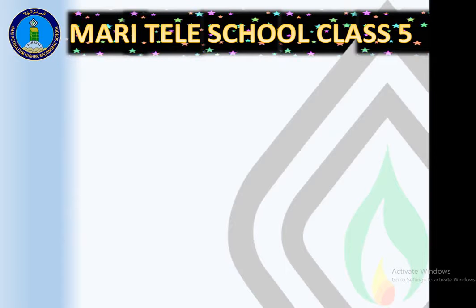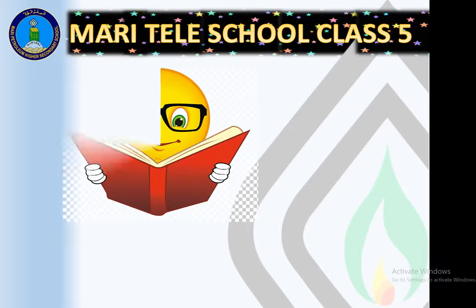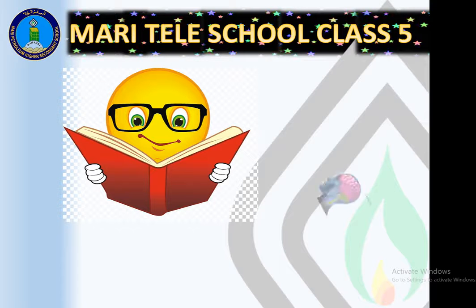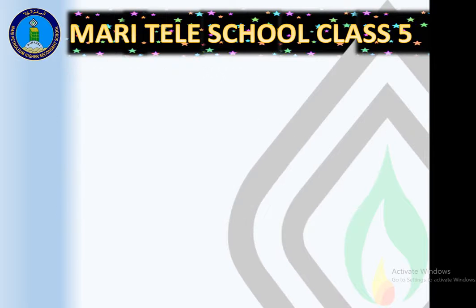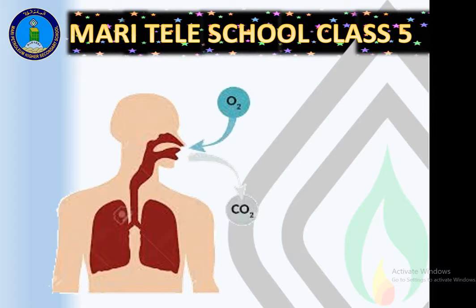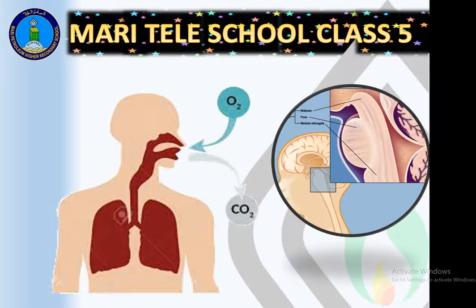Next activity: reading — cerebrum again. The cerebrum controls many activities. Now get ready: breathing, taking in oxygen and exhaling carbon dioxide. Is breathing voluntary or involuntary? It happens automatically, so the answer is the third part we studied — brain stem or medulla. That is the right answer.